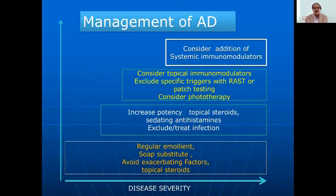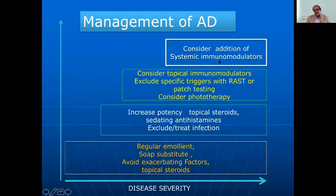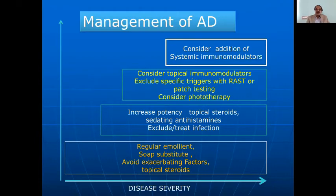For still more severe cases, calcineurin inhibitors can be used, especially for steroid-free topical therapy. For very severe cases, systemic immunomodulators like methotrexate or cyclosporine are used. Dupilumab is the biological agent used in severe atopic dermatitis, though in India it is not yet widely available as a tablet.